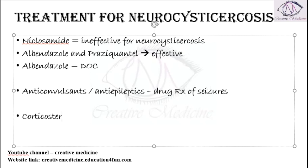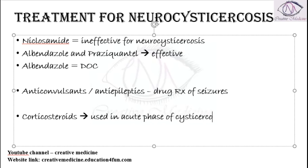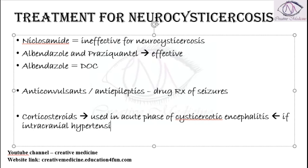Corticosteroids can also be used. They are used in the acute phase of cysticercotic encephalitis, especially when intracranial hypertension is present.